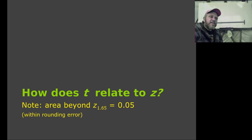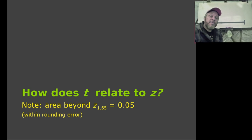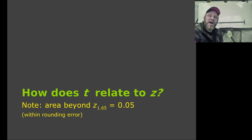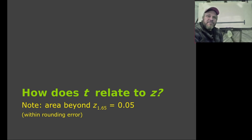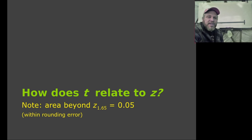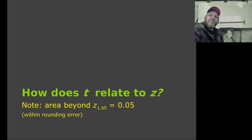To be more specific: if we were to sample from the population an infinite number of times and calculate a standard deviation for each of those samples, the average of those standard deviations would not be the population standard deviation. The mean, on the other hand, is nice — the average of all those millions of sample means would be the population mean. So we call the mean an unbiased estimate. But you can't say that about the standard deviation. The standard deviation is off by a bit — the average of all those millions of standard deviations would be a little bit too small.